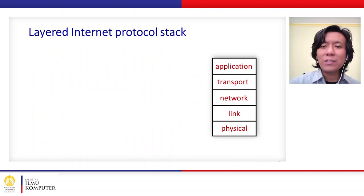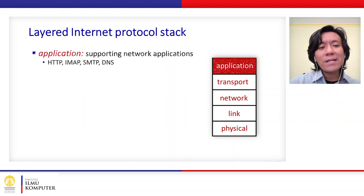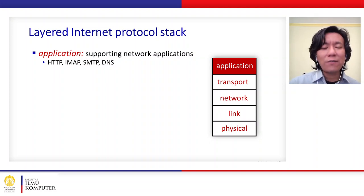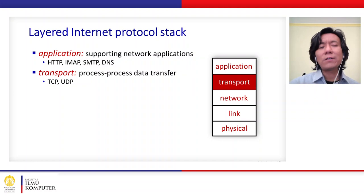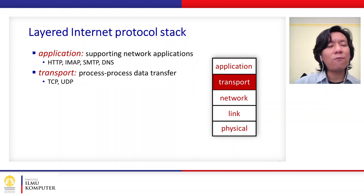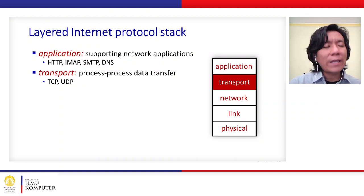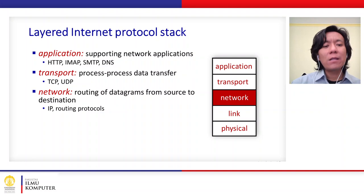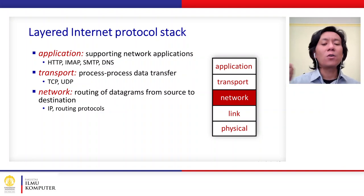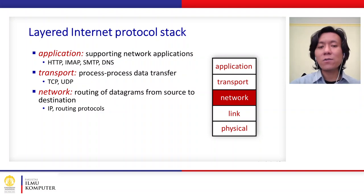Let's look at the layered internet protocol stack. The first layer is called the application layer — this is the top layer where applications reside. Several protocols relate to this layer, such as HTTP, IMAP, SMTP, and DNS. Below it is the transport layer, responsible for the data transfer process; there are two protocols here: TCP and UDP. Below that is the network layer, responsible for routing datagrams from one router to another from source to destination. Protocols involved include IP and several routing protocols.